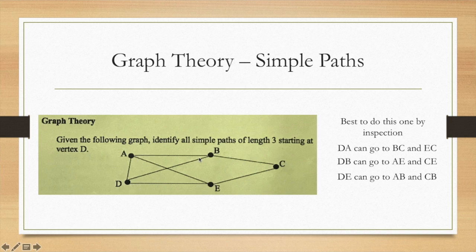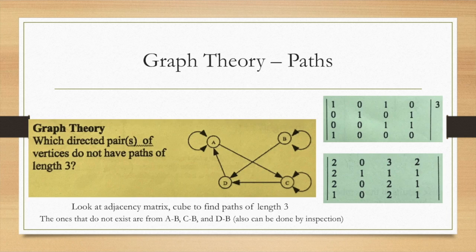Lastly we have a graph theory one again with paths. Which directed pairs of vertices do not have paths of length three? You get the adjacency matrix and then you cube it, so you multiply it by itself three times, and you end up getting this adjacency matrix. What you notice is that there's nothing from a to b, nothing from c to b and nothing from d to b. This actually makes sense because if you look, b only can stem from itself so there's one path b b b and then there's no other way from nodes a c or d to reach b.